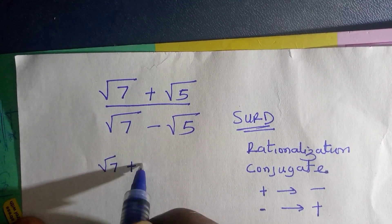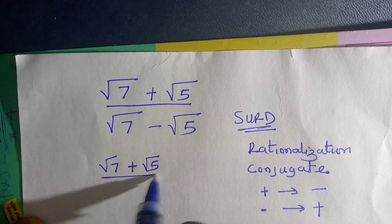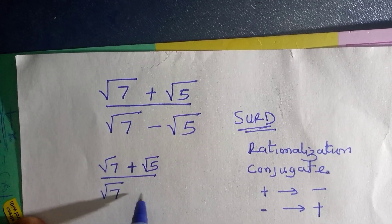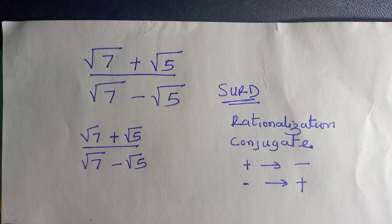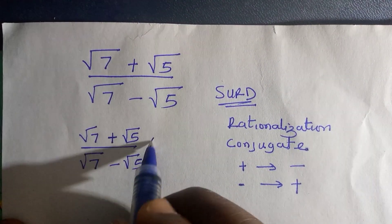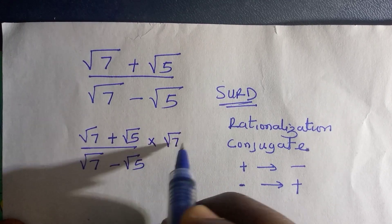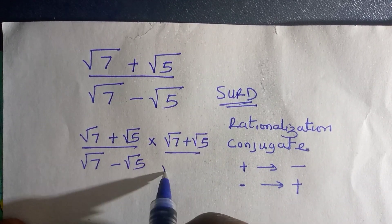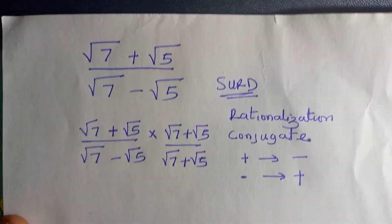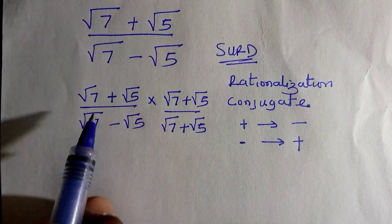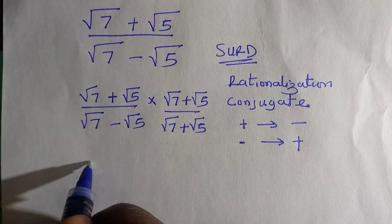Let's start. Here we have √7 + √5 divided by √7 - √5, and we are going to rationalize the denominator. We multiply it by the conjugate, and then we combine the numerator and denominator together.